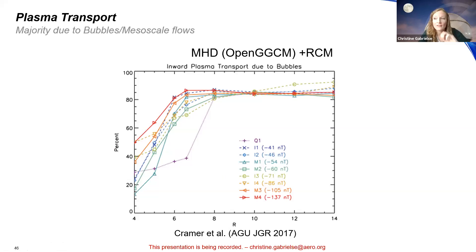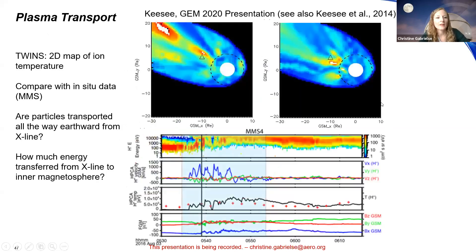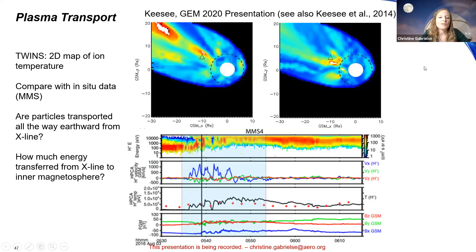Before wrapping up, I wanted to talk about plasma and particle transport. A figure from Kramer et al. shows that pretty much all plasma transport is due to mesoscale bubbles. Kesey et al. used TWINS data to make 2D maps of ion temperature in the magnetotail and compared with MMS data, showing mesoscale hot ion regions from plasma flows measured by MMS alongside fast flows and increased particles.